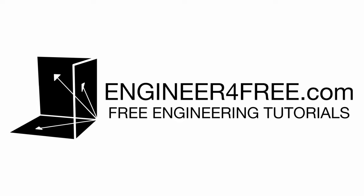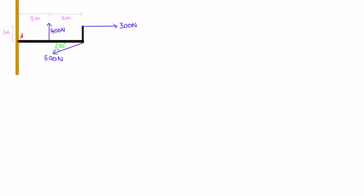Hey, welcome back. In this video I'm going over one more example about how to find the reaction at some connection in a 2D statics problem. We have a wall that's totally fixed and stationary, and we have an L-shaped bracket with a fixed connection to the wall at A. This thing is in static equilibrium — we're applying forces to it and we want to figure out what the reaction force is at A.